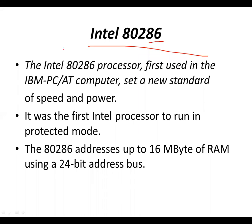The Intel 80286 processor was first used in the IBM PC and set a new standard for speed and power. It was the first Intel processor to run in protected mode. It could address up to 16MB of RAM using a 24-bit address bus.